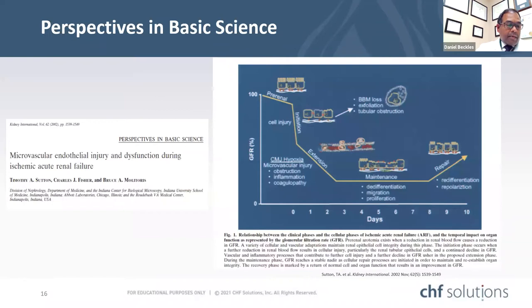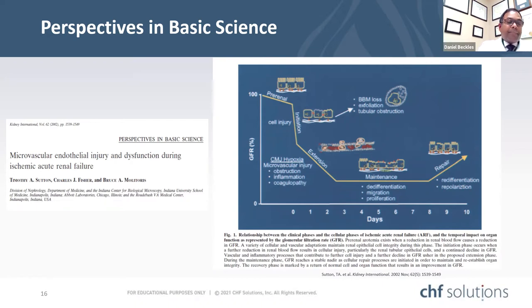An ischemic kidney injury model demonstrates the relationship of decreased glomerular filtration rate and renal tubular epithelial cell injury, followed by inflammation and extensive remodeling, which can last three to seven days to restore and improve GFR. This very vulnerable period is needed to recuperate, and what action is taken during this recuperation phase will determine prognosis.